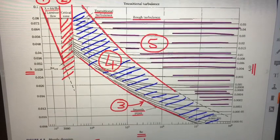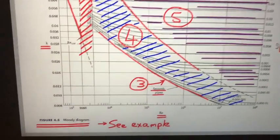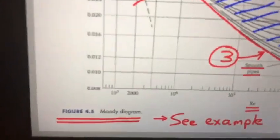Let us return briefly to the value of lambda equals 0.02. You will find on the Moody diagram that is in your textbook, figure 4.5.